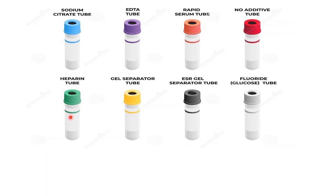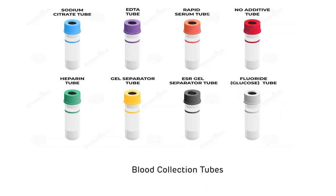The green color tube is called the heparin tube. The yellow color tube is called the gel separator tube. The black color tube is called the ESR tube, and the gray color tube is called the fluoride tube, which is used for glucose estimation. You can also watch my previous video for more details on vacutainers and their uses.